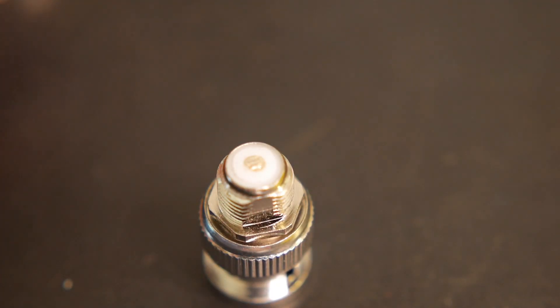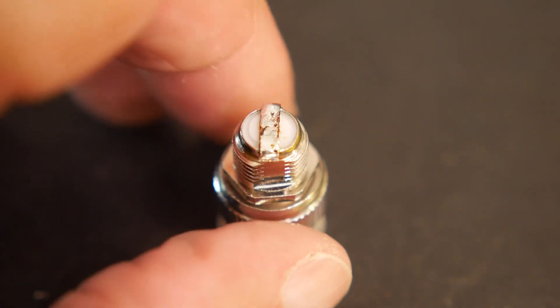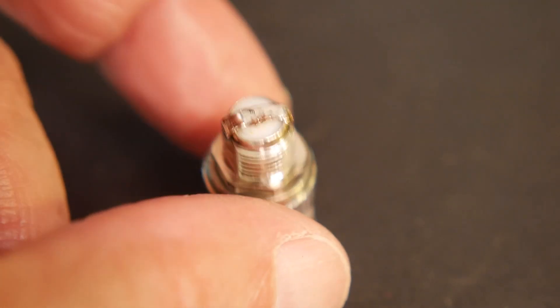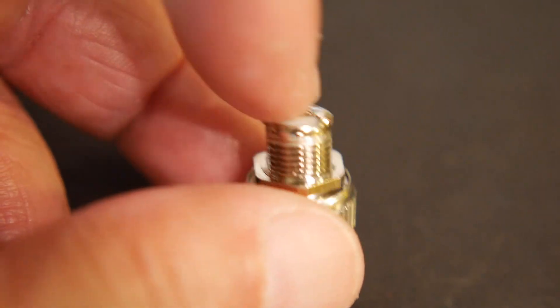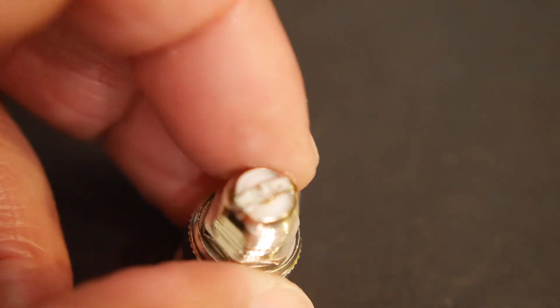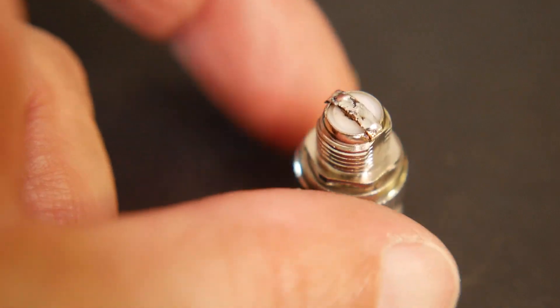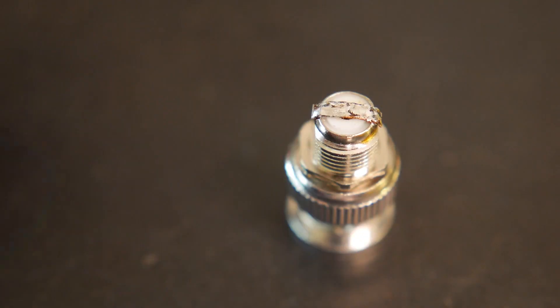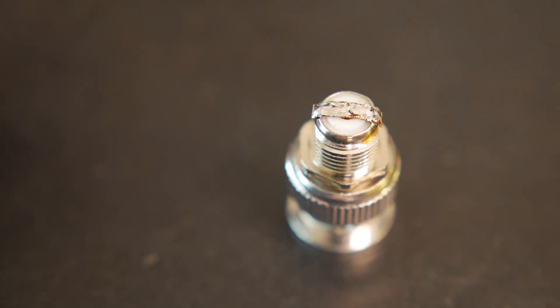And then I took a piece of braid material. I actually used some solder wick as the braid material. And I soldered across the connector and the center pin braid such that hopefully the reflection happens right at that plane.